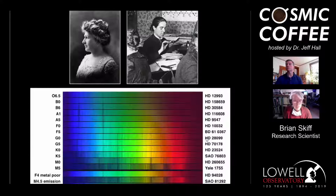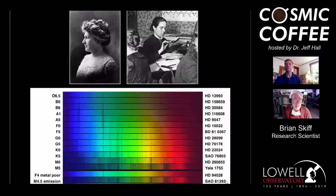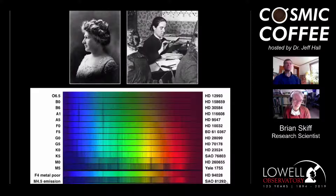Another example at the bottom is SAO 81292, which is AD Leonis — a very nearby dwarf star in the constellation Leo, visible in the evening nowadays. That is a star young enough that it's still active and shows flares in the spectra. This elaboration of stellar spectra got more and more detailed as we were able to get better and better detectors — photographic plates — allowing people to see spectra at higher resolution.